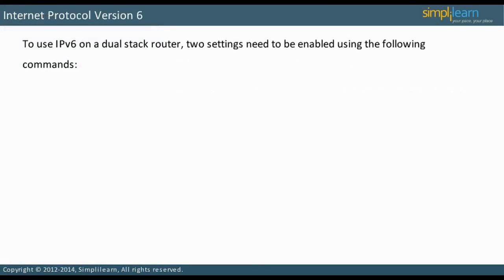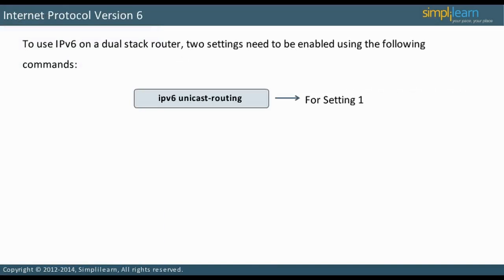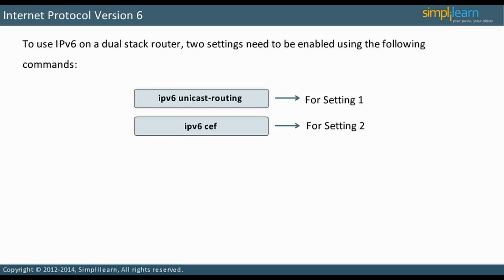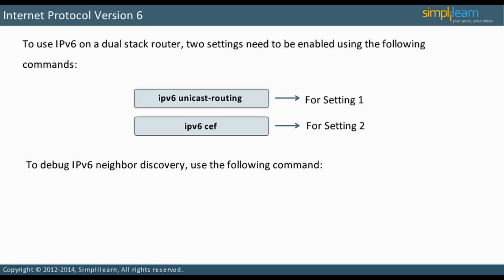Two settings must be enabled to use IPv6 on a dual-stack router. The IPv6 unicast routing setting is not enabled by default, while the IPv6 CEF setting is usually the default. Check the configuration to make sure both are enabled. Neighbor discovery is an important function that affects addressing, routing, and switching for IPv6. Use the command given on the slide if you suspect there are problems in those areas.